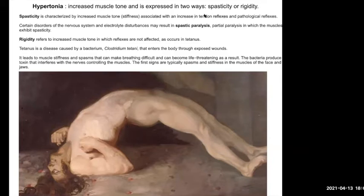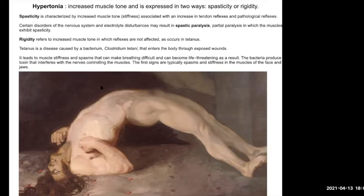There's also hypertonia — increased muscle tone. You can think of this in two ways. Spasticity is one form of increased muscle tone, and this is about tendon reflexes and pathological reflexes — a kind of increased contraction without you wanting it. The other is rigidity: also increased muscle tone, but not about reflexes — it's another kind of neural problem.